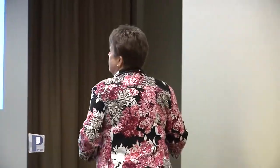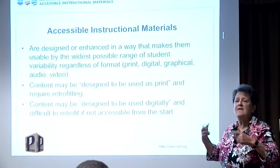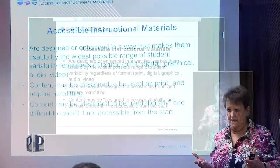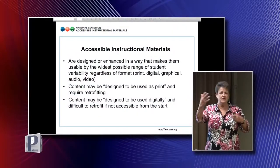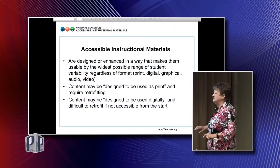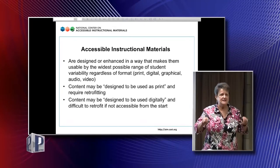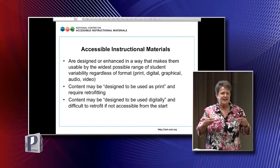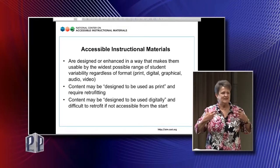When content is designed to be used as print, we have lots of processes for retrofitting that content — we can scan it or use a digital file created by a publisher. But if content is designed to be used digitally, there is very little we can do to make it accessible if accessibility features were not built in. Those accessibility features are multiple options that can be turned off and on so that the material is customized for an individual user. The content is exactly the same, but we can do things with that malleable content.